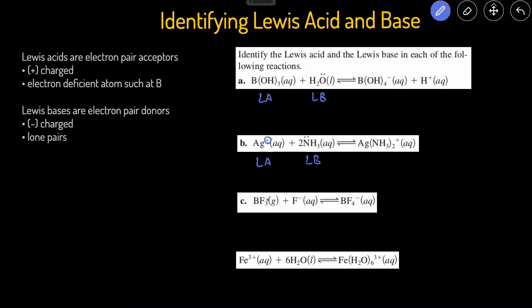In part C, once again, we have a boron, so this is going to be a Lewis acid. And the fluorine, it's going to be the Lewis base, because it has the negative charge.